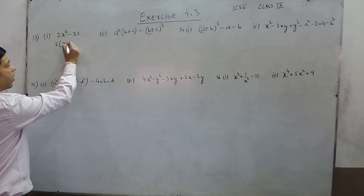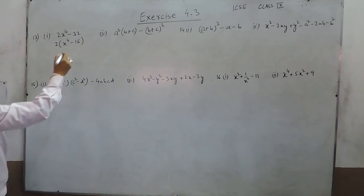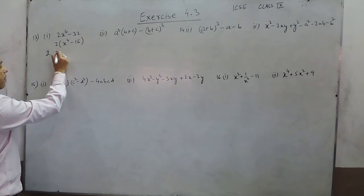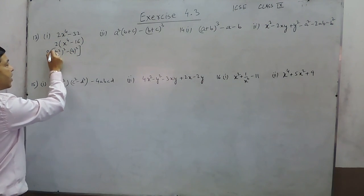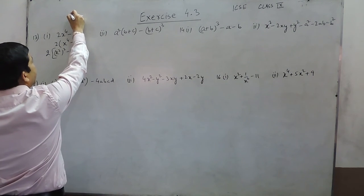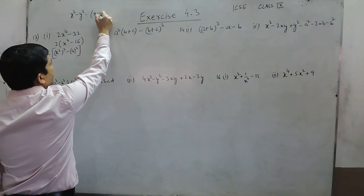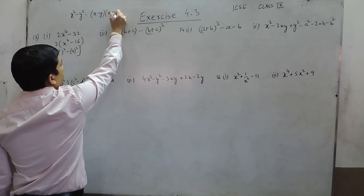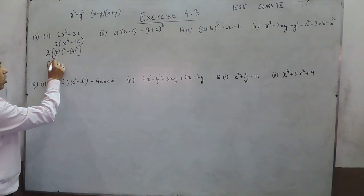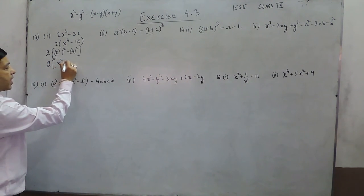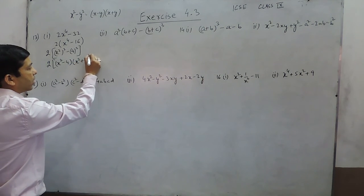When we take 2 common, it is x to the power 4 minus 16. Further, if we factorize, it can become x square whole square minus 4 whole square. As we already know the identity x square minus y square is equal to x minus y into x plus y. So when we factorize this, it becomes 2 times x square minus 4 in one bracket and x square plus 4 in another bracket.